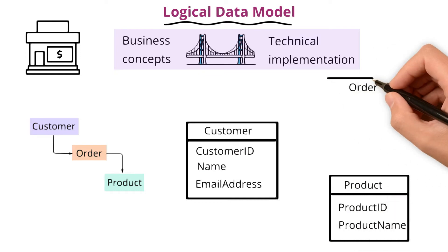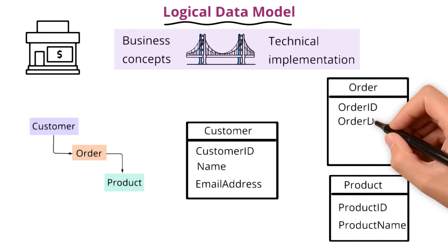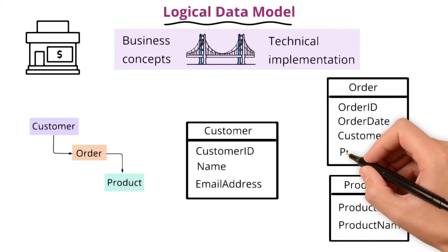For orders, we'd include order ID, order date, customer ID, and product ID.